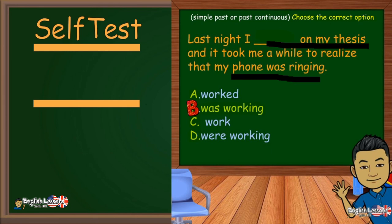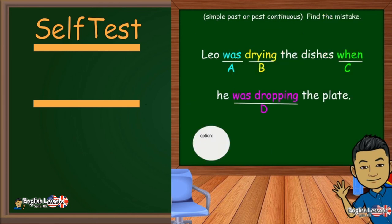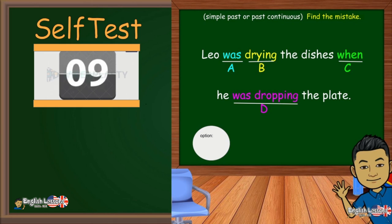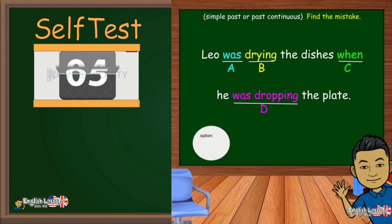Find the mistake. Leo was drying the dishes when he was dropping the plate. Yes, the mistake is on letter D.